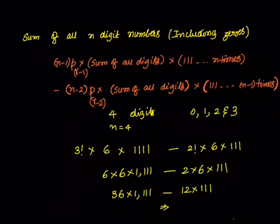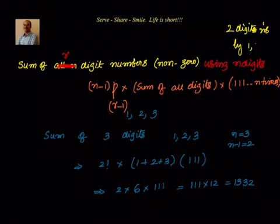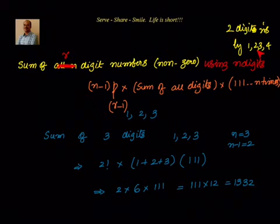This is the most generalized form. Let's explain it with an example. Suppose you want to find the sum of all 2 digit numbers using 1, 2, 3, 4. Here n equals 4 (four digits given) and r equals 2 (we want 2-digit numbers). You substitute n = 4 and r = 2 into the generalized formula.